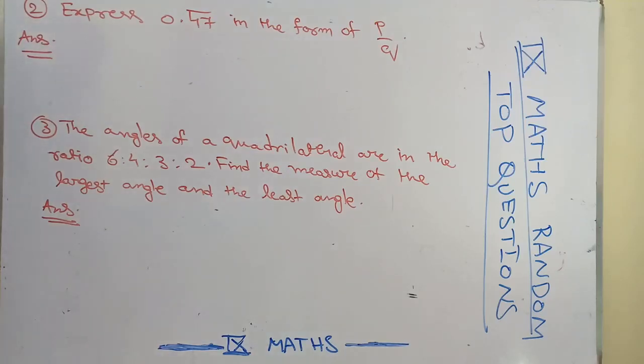Welcome to iSquad Chaps. This is class 9th mathematics series questions, topmost questions. Express 0.47 bar in the form of p by q. This is the question which is asked.